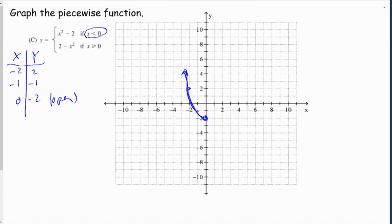And then we see that x is allowed to be equal to 0 here. So we'll make our xy table for the right-hand side. We'll do 0, 1, 2. And 2 minus 0 is 2. 2 minus 1 squared is 1. And 2 minus 2 squared is negative 2. So at 0, we'll put a closed point at 2. 1, 1. And 2, negative 2. We have a parabola going in this direction.